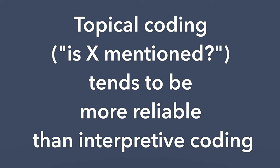It really depends on what you're coding for in terms of how smoothly the inter-rater reliability process can go. If you're coding for more topical ideas — just coding for whether or not this topic is being described — those can be more reliable. Miles and Huberman talk about how topical coding, coding for what's obvious in the text, is more reliable than more interpretive coding.